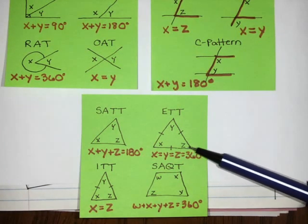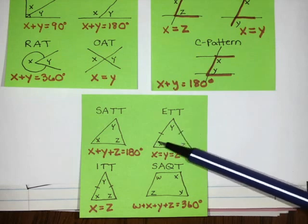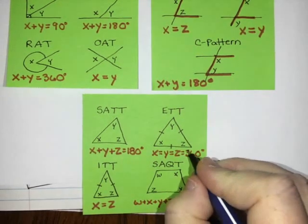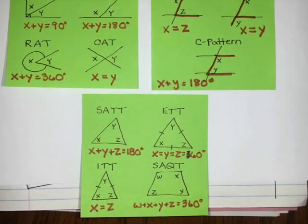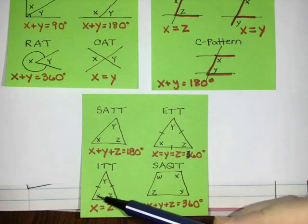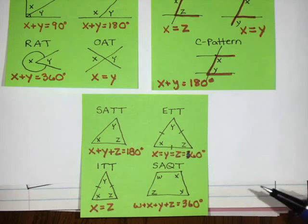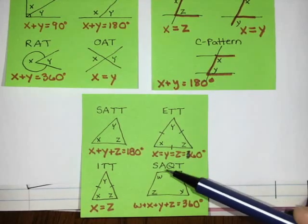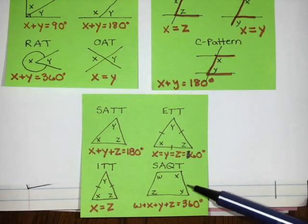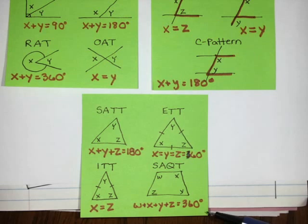For an equilateral triangle, all the angles are equal and they're all 60 degrees — I wrote 360 but they are all 60 degrees. In an isosceles triangle, or ITT, two of the angles are equal — they're the ones where the two equal sides meet the unequal side. Our newest theorem is the sum of the angles in a quadrilateral theorem, which says that the angles in a quadrilateral add to 360.